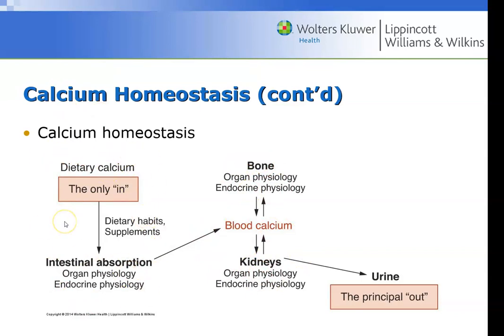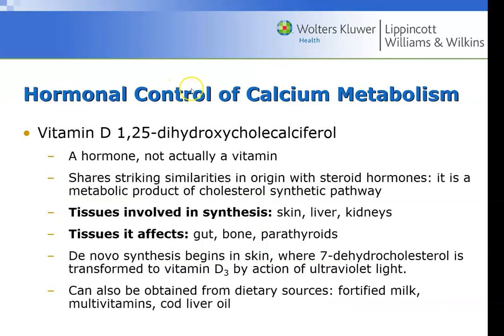Vitamin D3 is actually called 1,25-dihydroxycholecalciferol. The reason it's called cholecalciferol is because it is a derivative of cholesterol — it is a steroid hormone. It is made by multiple pathways: your skin starts the whole process, then it goes to the liver where it becomes vitamin D2, and then it goes to the kidneys for the final stage — the kidneys produce the final activated vitamin D3.